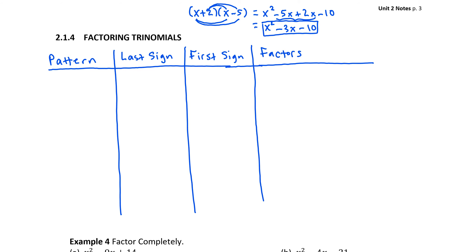Starting with the possibility of two positives, we're looking at trinomials of the form x squared plus bx plus c. Notice our leading coefficient — the coefficient of x squared — is 1. We want to figure out what the signs of the factors are that would produce this trinomial. We know it's going to be the product of two binomials. In the first two spots we'll have x and x, because x times x produces x squared. In the second two spots we'll have some numbers that multiply to give us c.